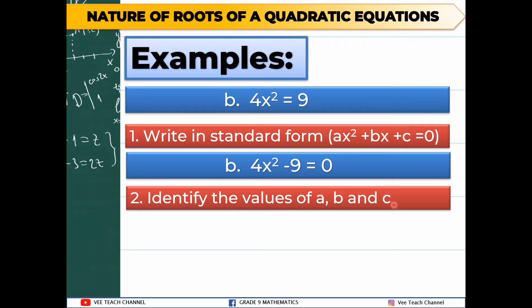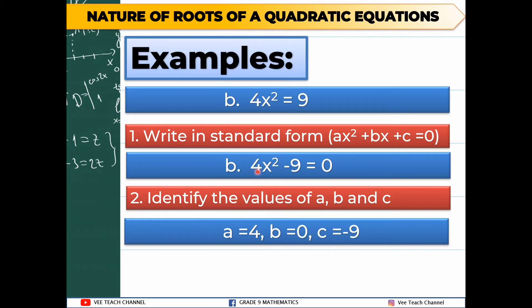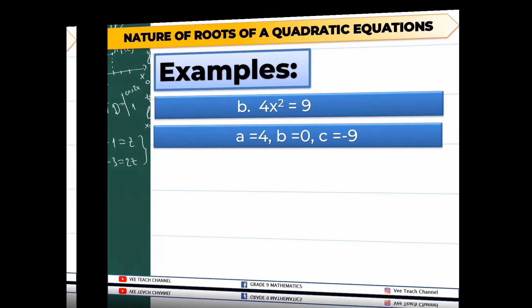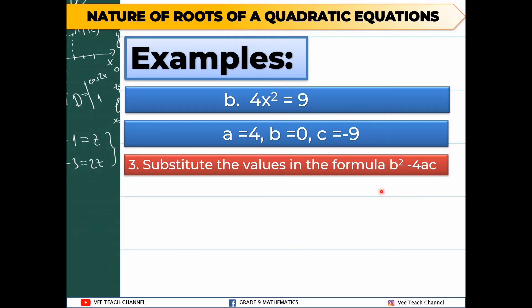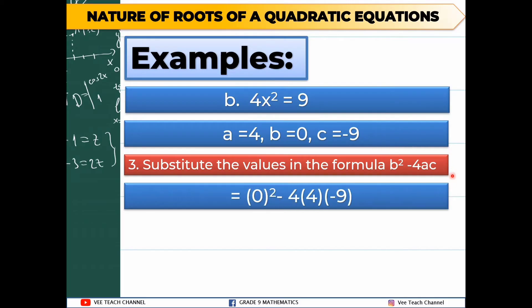Since we now have our equation in standard form, we can identify the values of a, b, and c. A is 4. B is 0, because there is no linear term or x term. C is negative 9. We then substitute these values into our formula b squared minus 4ac: 0 squared minus 4 times 4 times negative 9.